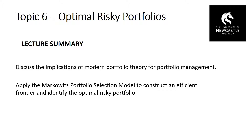To apply Markowitz portfolio selection and derive the efficient frontier, an investor needs to specify inputs into the model. To calculate the mean and variance of combined portfolios, we need the expected returns of each asset — used to create the portfolio's expected return — and we need the variance-covariance matrix: the risk of individual assets and the covariances or correlations between assets, since the inputs to the portfolio variance formula are simply the weights, the variances, and the covariances between those assets.